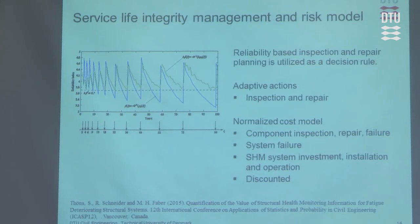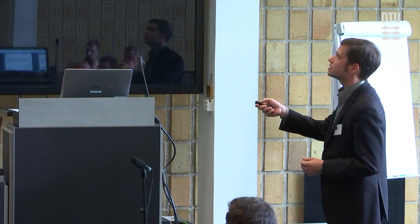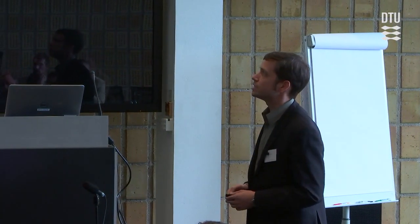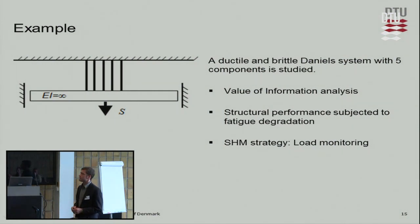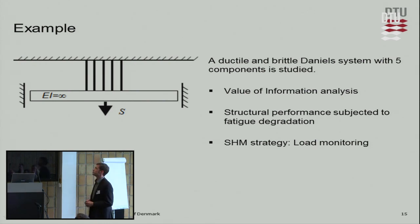Let's consider an example with a Daniels system. This is characterized by an assembly of components subjected to load, where individual components can behave either ductile or brittle. A ductile Daniels system has similar characteristics to a parallel system but also has mechanical justification, whereas a pure parallel system does not. A brittle system behaves similarly to a series system.